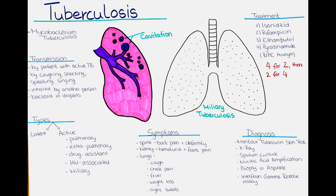Sputum culture is a laboratory test used to diagnose tuberculosis by growing and identifying the bacteria from a sample of sputum — mucus coughed up from the lungs. The sputum culture is one of the most sensitive and specific tests for diagnosing tuberculosis, particularly in individuals with symptoms such as cough, fever and weight loss. The test is usually done after a person has produced sputum for several days, as the bacteria may not always be present in the first sample.